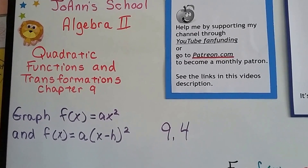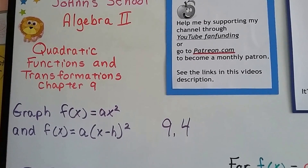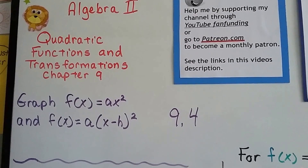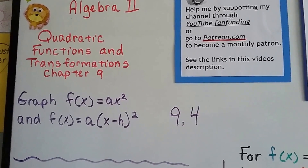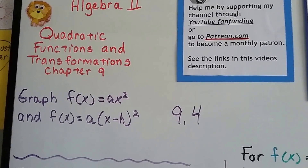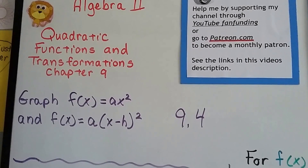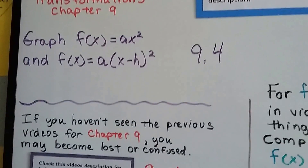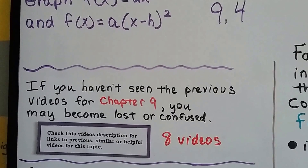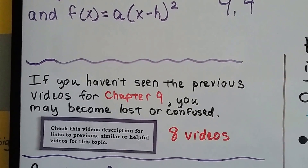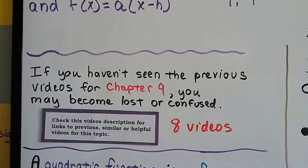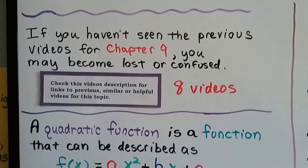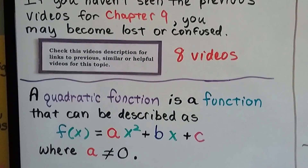We're continuing on in Algebra 2, at section 9.4. We're going to talk about the graph of the function f(x) equals x squared and the function f(x) equals a times the square of the quantity x minus h. We have eight previous videos for this chapter. If you become lost or confused, you can try watching the video again, or click on the description to find which video might help.